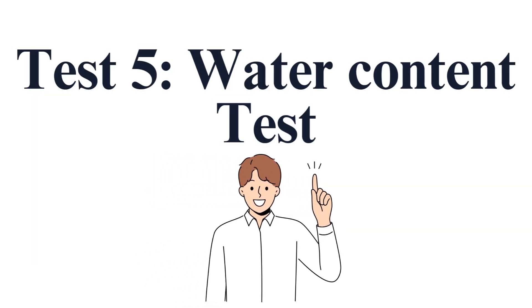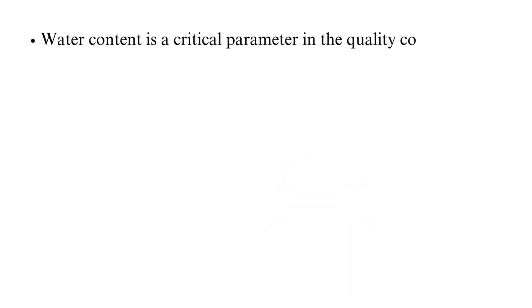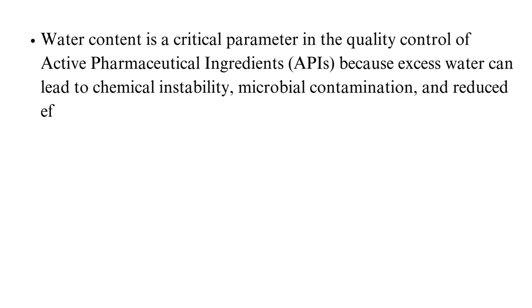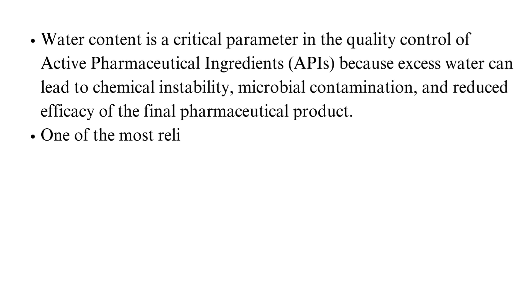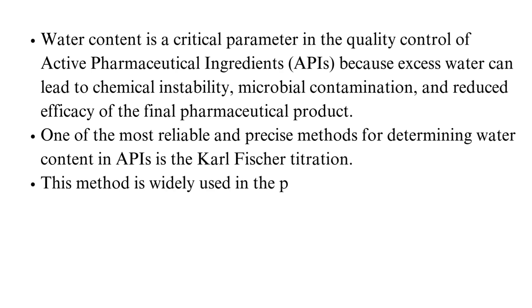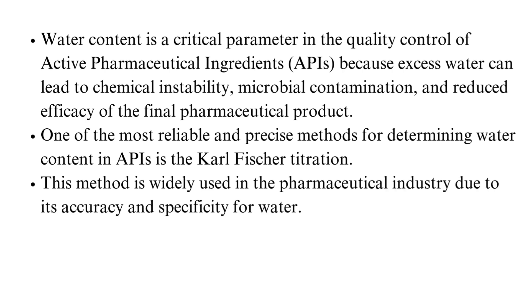Test 5: Water Content Test. Water content is a critical parameter in the quality control of APIs because excess water can lead to chemical instability, microbial contamination, and reduced efficacy of the final pharmaceutical product. One of the most reliable and precise methods for determining water content in APIs is Karl Fischer (KF) titration, widely used in the pharmaceutical industry due to its accuracy and specificity for water.